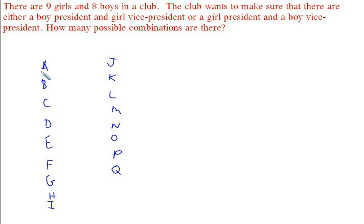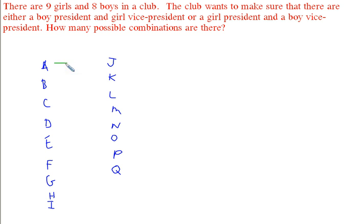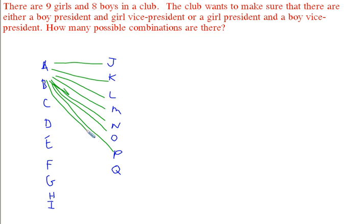If girl A is elected president, how many possible ways are there to have a boy elected vice president? Well, she could be paired with each of the eight boys — so there are 8 possible ways if A is elected president.